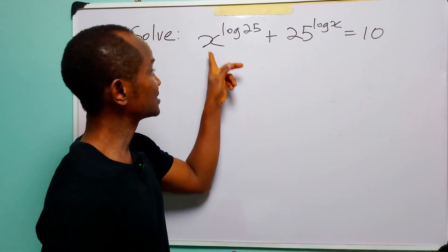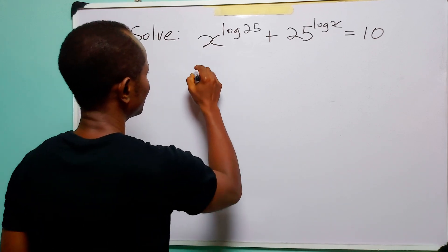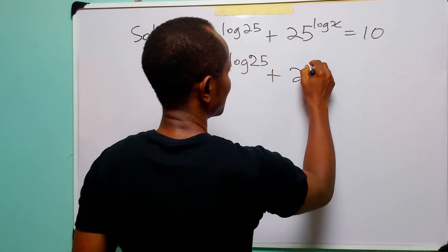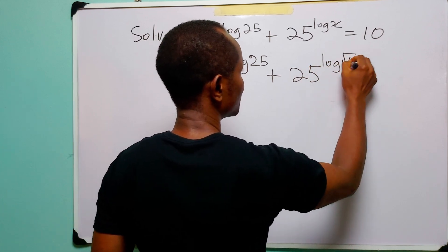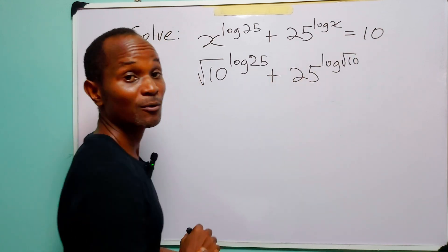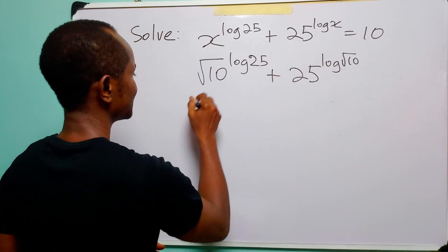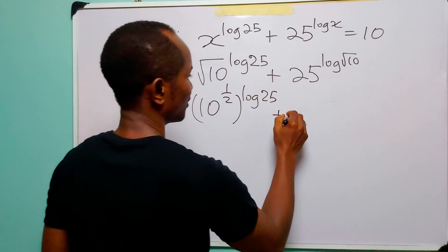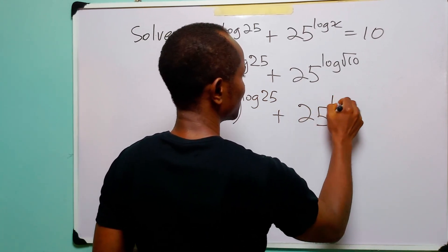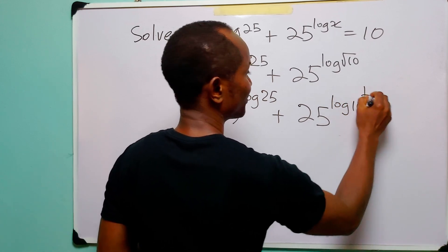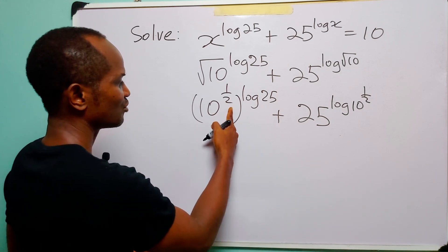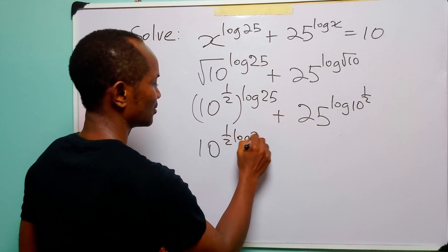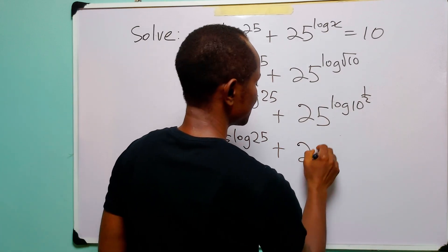To check the answer, let us substitute root 10 for x in this equation. When we do that, we have root 10 to the power log 25, plus 25 to the power log root 10. Let us see if the left-hand side equals 10. Root 10 is the same as 10 to the power half, so we have 10 to the power half, raised to the power log 25, plus 25 to the power log of 10 to the power half. To open this bracket, we multiply the exponents, giving 10 to the power half multiplied by log 25 plus 25 to the power half times log 10.